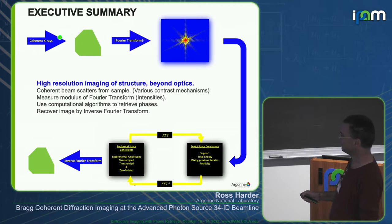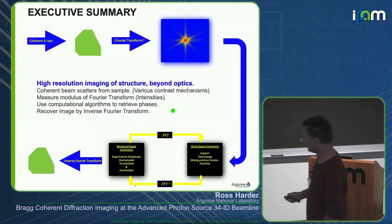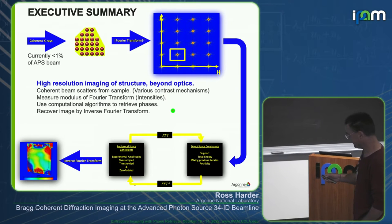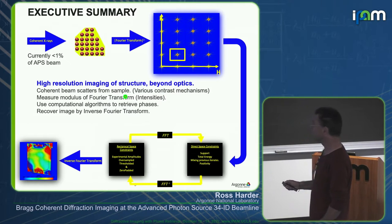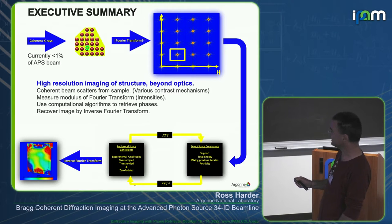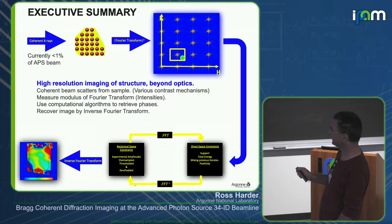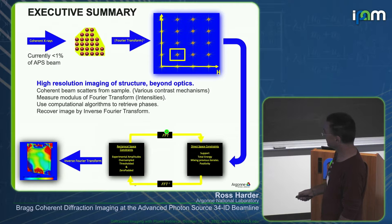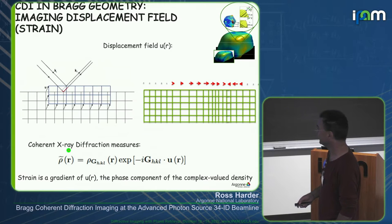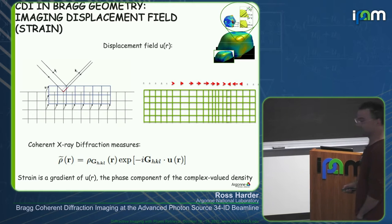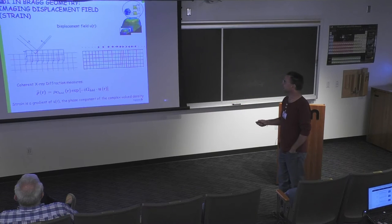You put some kind of coherent beam onto a sample, there's scattering, an interference pattern forms, and you use phase retrieval algorithms to get an image of the sample. At 34IDC, we have a fairly unique way of doing this. We tend to look at small crystalline objects, and if the object is crystalline, the Fourier transform will have a lattice associated with the real space lattice. In reciprocal space, we go out to a Bragg peak and measure the scattering in the vicinity of that peak, then phase it with iterative algorithms to look at images of these little crystalline objects with a fairly unique contrast mechanism.